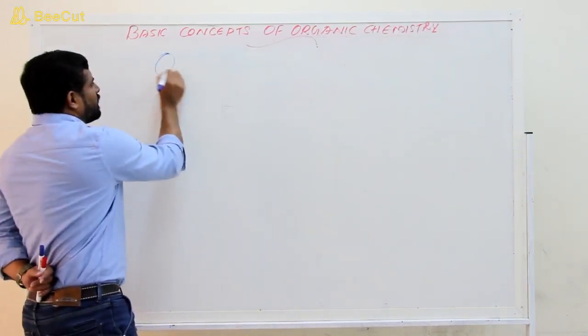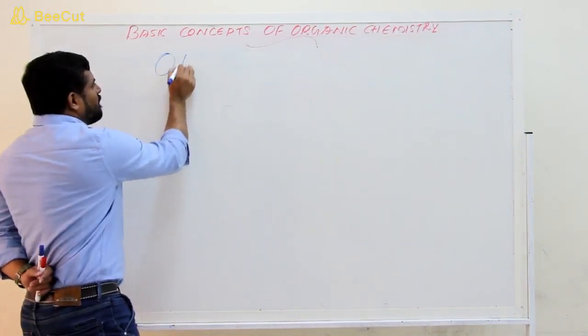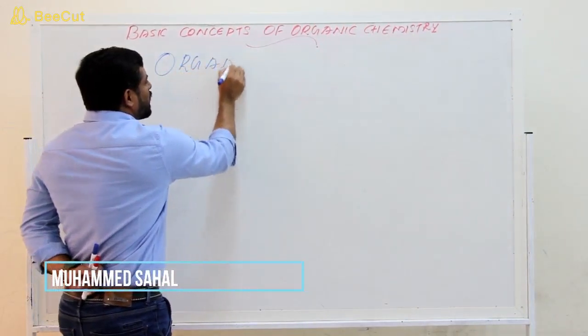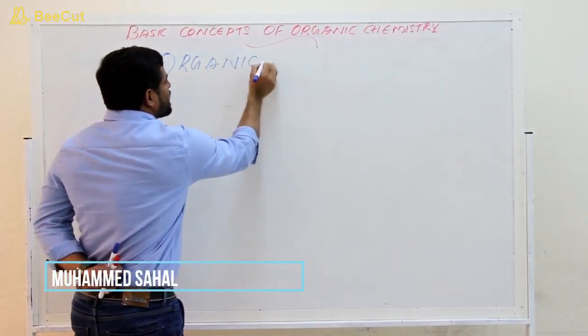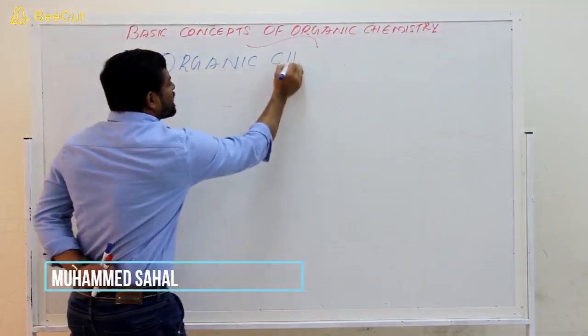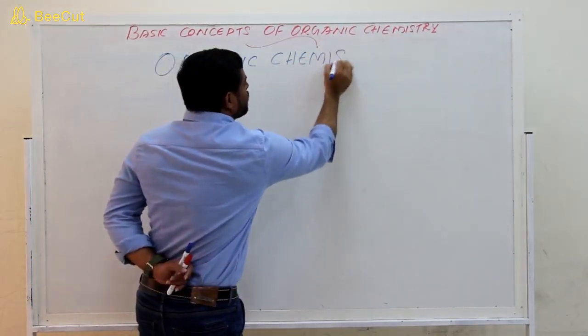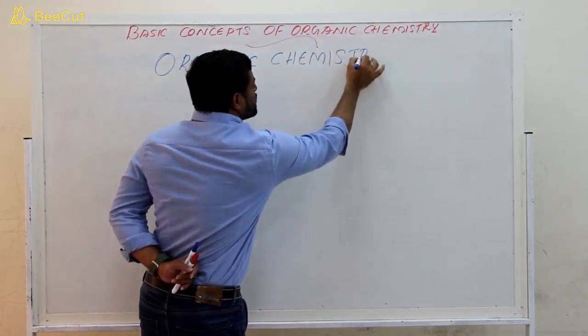First of all, we want to know about organic chemistry. Organic chemistry is a branch of chemistry which deals with the study of carbon compounds.